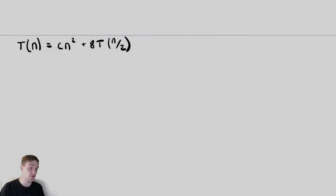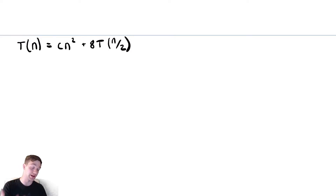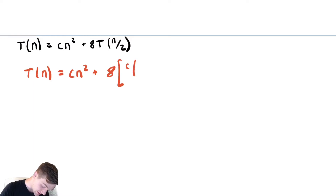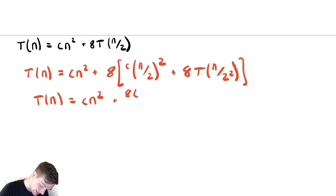For our last example we're also going to use substitution, for a very practical reason: we're making eight recursive calls. That means on the second level of our recursion tree we would have 64 different nodes, and I do not want to draw that. So substitution is really the only way forward. Performing one substitution we get cn squared plus 8 times (cn/2 squared plus 8T(n/4)), which gives cn squared plus 8cn squared over 4 plus 8 squared times T(n/4).